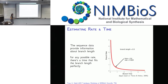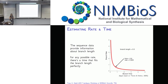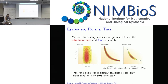The branch length is a compound parameter - a product of the substitution rate and the time duration of a branch. If a branch length has maximum likelihood of 0.5, there's an infinite combination of rate and time that equals 0.5. This is what makes the problem tricky: the two things we're most interested in are confounded into a single parameter, so we have to separately estimate them.